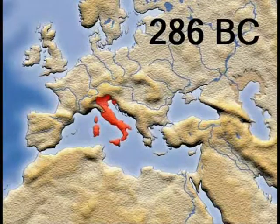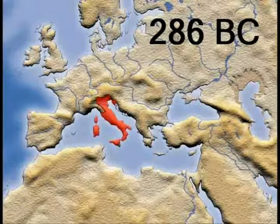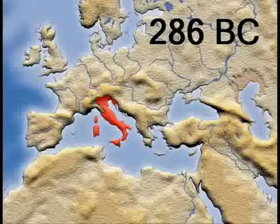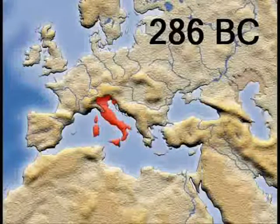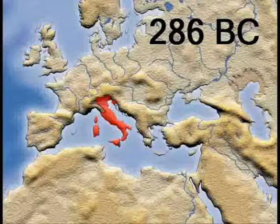The Roman Empire in 286 BC consisted of Italy and the islands of Corsica, Sardinia, and Sicily. Almost 400 years later, it had grown to an area that now comprises 40 countries in Europe and Asia.